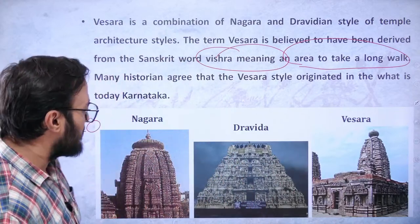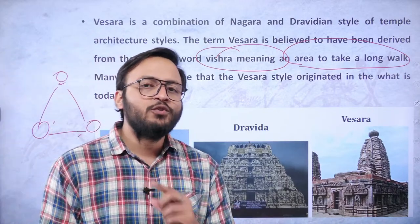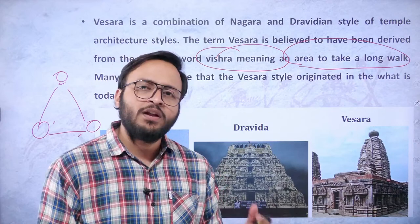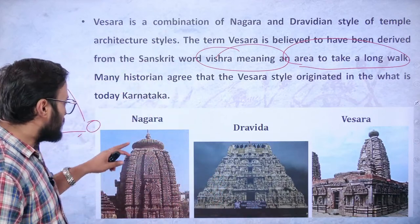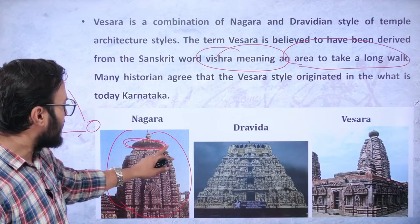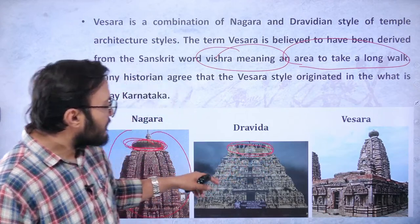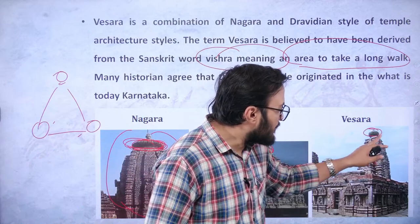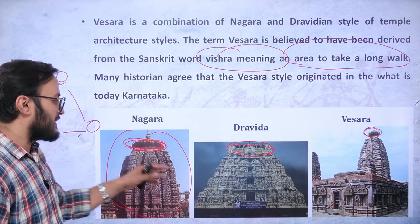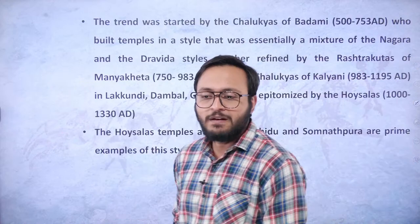From today onwards, you should never be confused identifying any temple. Just look at the spire of the temple and you will recognize it. In the Veser style, there is a spiral wheel, then a vaulted roof, and then a domical-like finial on top. Two of these specifications have already been studied; today we are learning about the third one.